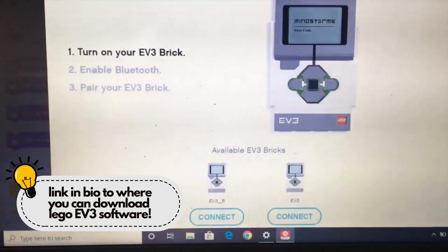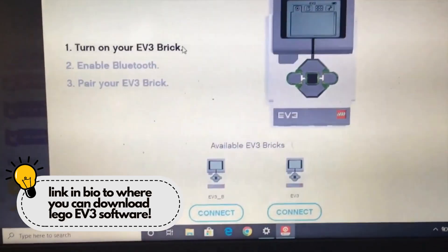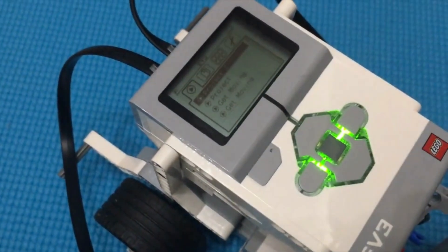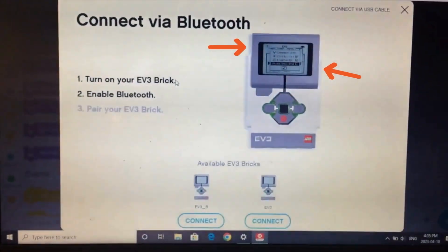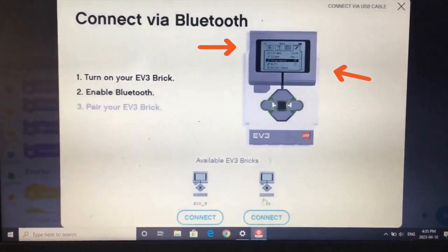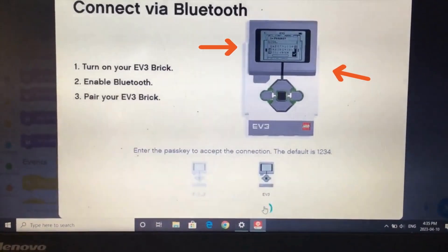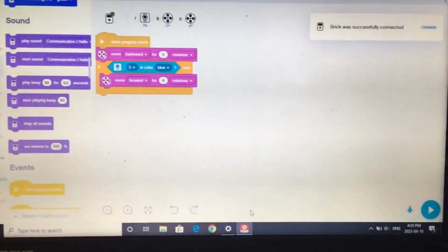The first thing that we want to do is connect it via Bluetooth. Your robot should show up as long as your Bluetooth is on on your computer. If it doesn't show up, you may need to turn on Bluetooth on your robot as well. You can do that through navigating on the screen of your robot until you find Bluetooth and making sure that is checked. It should say brick was successfully connected once it is.